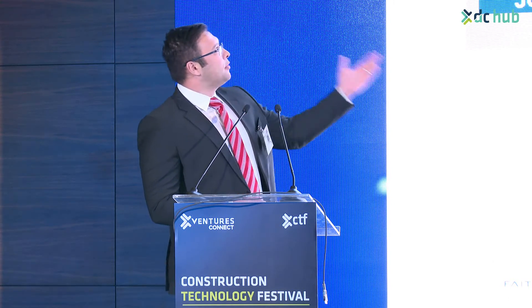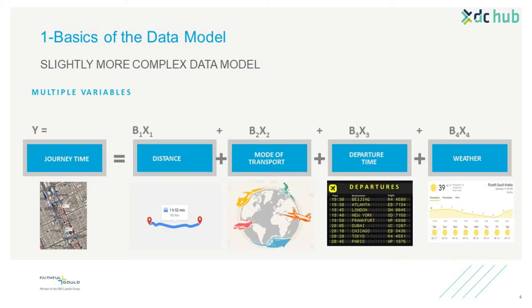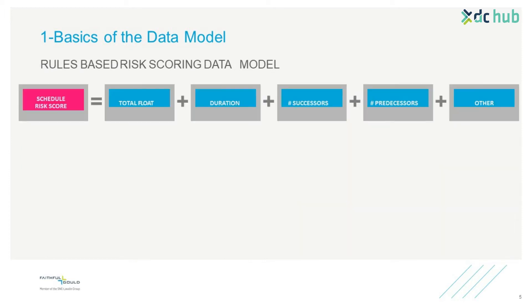In normal circumstances, if you are looking at a basic simple data model, journey time is very related to distance. If you want to make things a bit more complex, we look at journey time, distance, mode of transport, departure time, and weather. Applying this to our schedules, it may relate to total float, duration, number of producers, and other things.